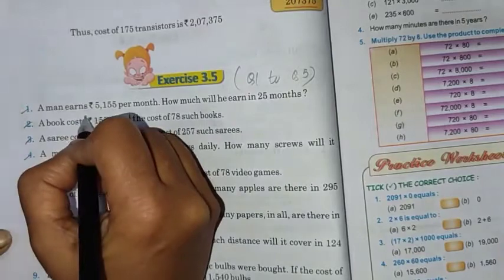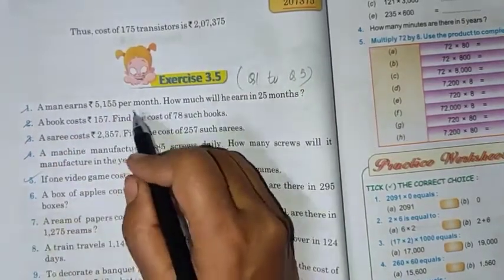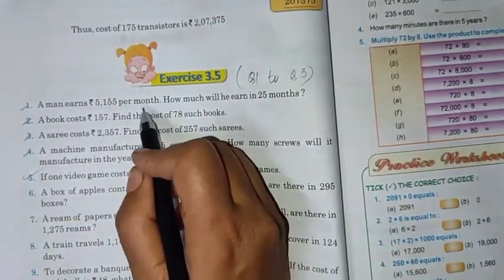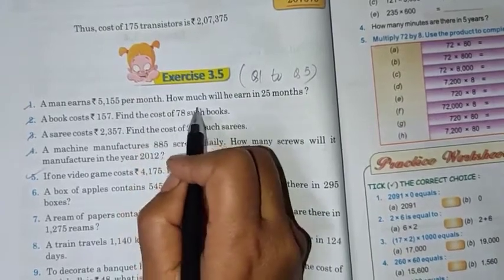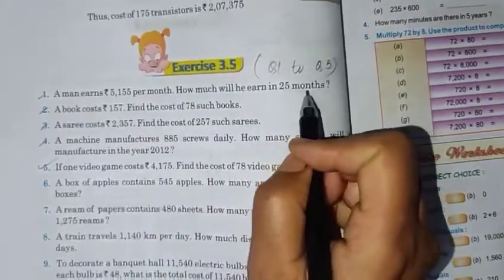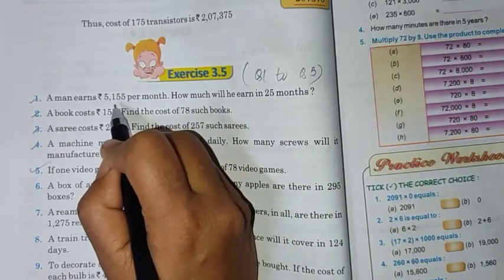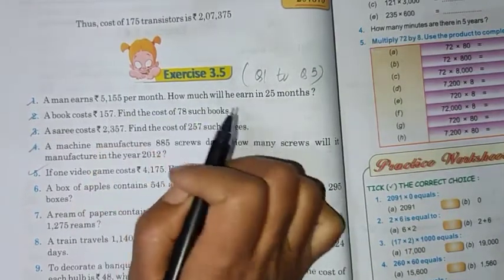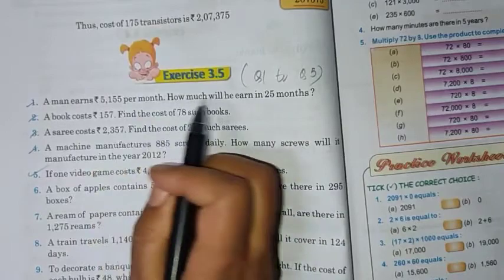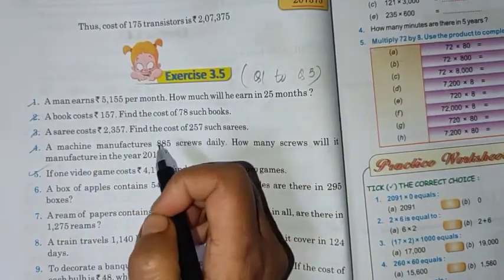Now, a man earns 5,155 rupees per month. Per month means 1 month. How much will he earn in 25 months? Here the value of 1 month, 1 month salary is given. Then we have to find 25 months. 1 is given, we have to find more. So what to do? Multiply.